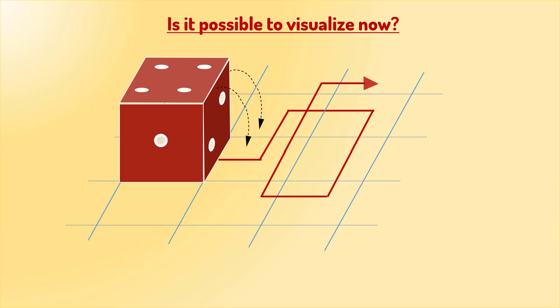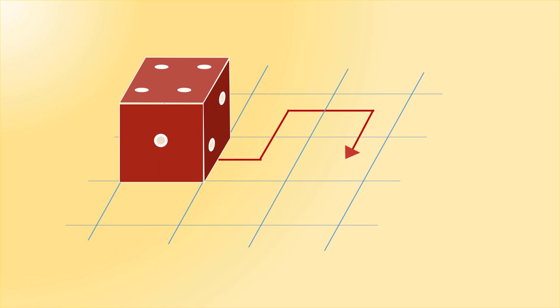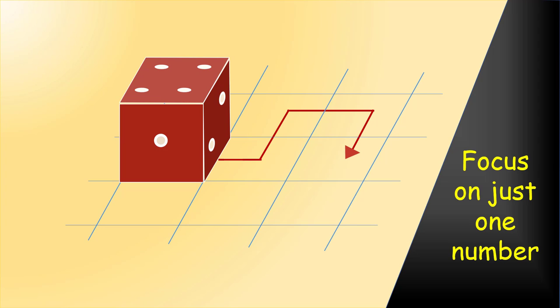So, to solve this problem, we should come up with a logical plan. We can't keep track of all 6 numbers, but it's very easy to focus on just a single number. So, let's give it a try and I will go with the number 1. It's initially on the front face.